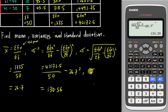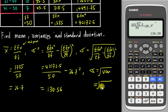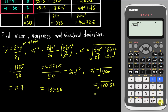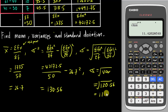For the standard deviation, it's simply the square root of the variance, since the formula is identical to variance but with a square root. So I take the square root of 130.56. To reuse the same number, I type square root, then the answer key, then equals — and the calculator gives a standard deviation of 11.4263.